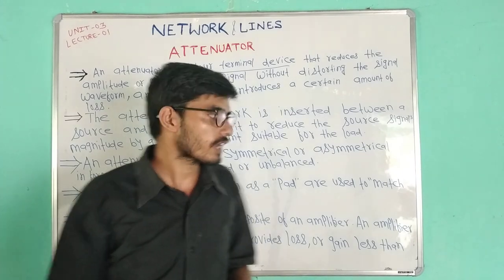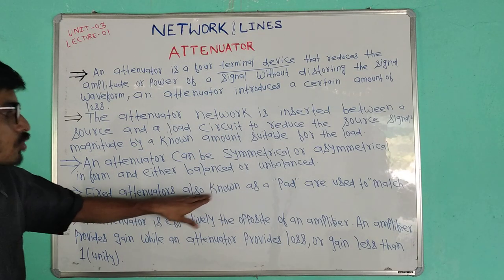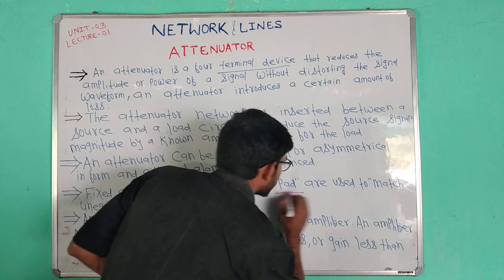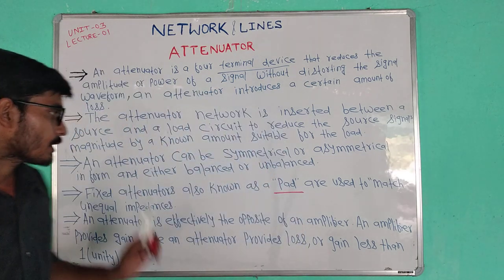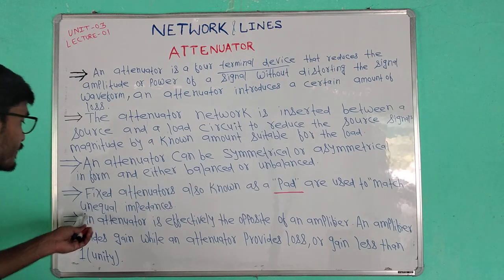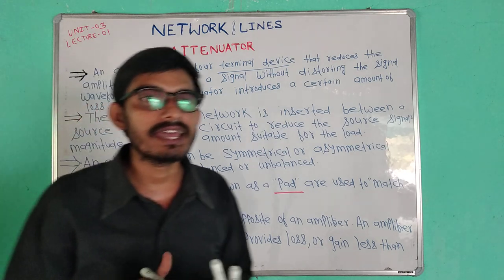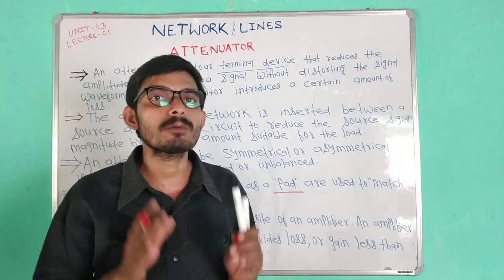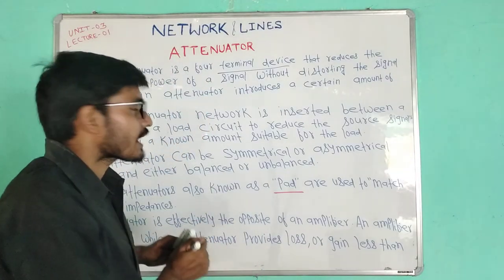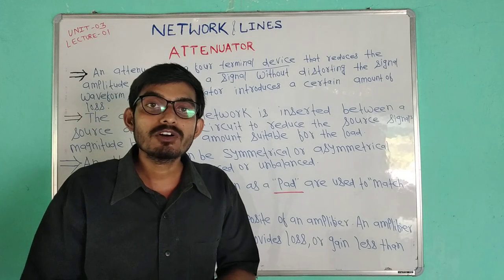The attenuator is also known as a pad. A fixed attenuator, also known as a pad, is used to match unequal impedances. We use a fixed attenuator to match unequal impedances for matching purposes.